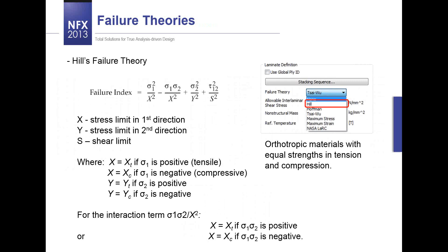The first failure theory presents an equation representing a failure envelope in the stress space. If the stress state of the orthotropic lamina falls within this envelope, the lamina is safe; if outside, the element is considered to have failed. The parameters used in these equations are: stress limit in the first direction, stress limit in the second direction, and shear limits. This theory works fine for orthotropic materials with equal strength in tension and compression.